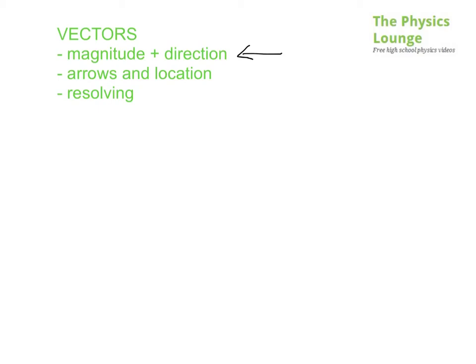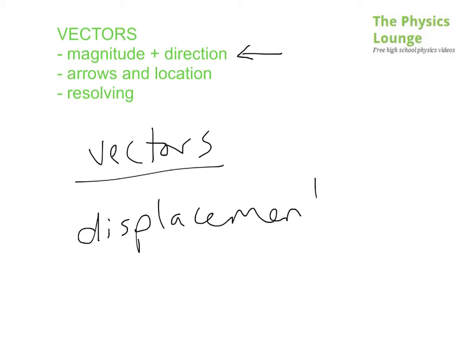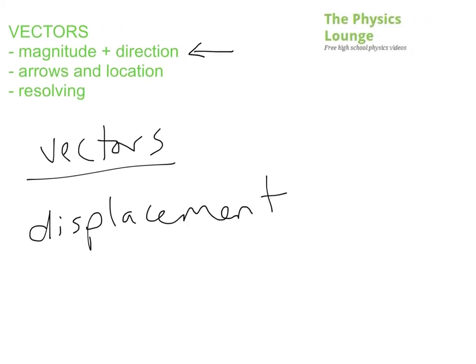so what does that mean for us? I'll give you an example of vectors. Something like displacement. And you're probably thinking about water. But the alternative, let's just shuffle across a little bit. The alternative for displacement would be something called distance.